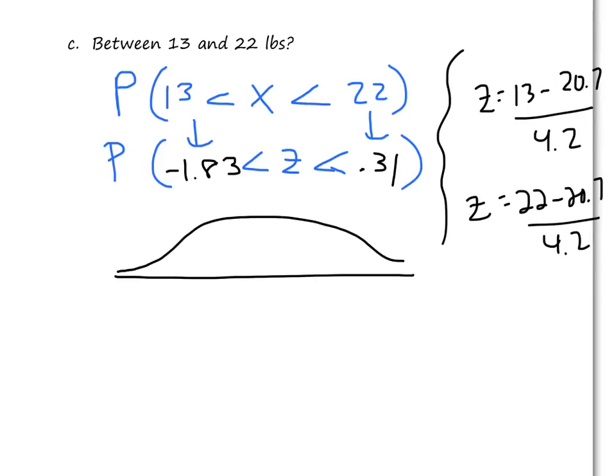So if I look at this on a picture, so here's my zero. This one's below the mean, almost two standard deviations below the mean. And this one's just really, it's probably even closer to the zero. I probably exaggerated a little bit, but it's not even a half a standard deviation above the mean. And I'm trying to find the area in between here.